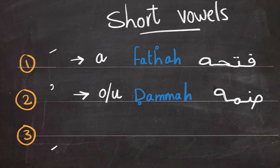The last short vowel is written underneath the letter. And it gives the sound of E. And it is called Kasra.